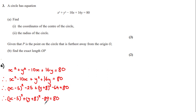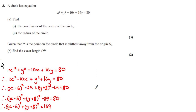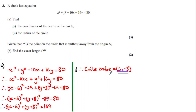We can then add 89 to both sides to get: x minus 5 all squared plus y plus 8 squared is equal to 169. From here we can answer the first part of the question. As we know the form of the equation of a circle, we can determine that the circle center is (5, minus 8).